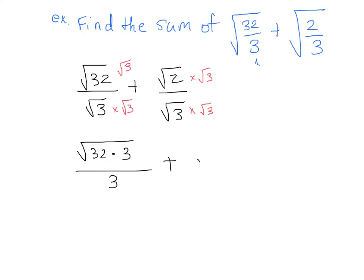And then we have root 2 times root 3, which is root 2 times 3, over 3. Getting warmer. So now root 32 times 3 is actually root 96 over 3 plus root 6 over 3.